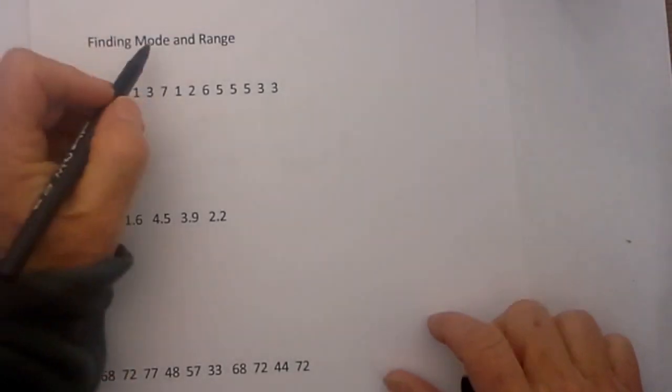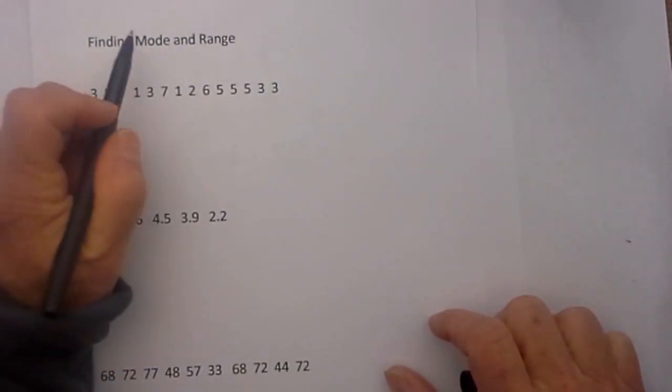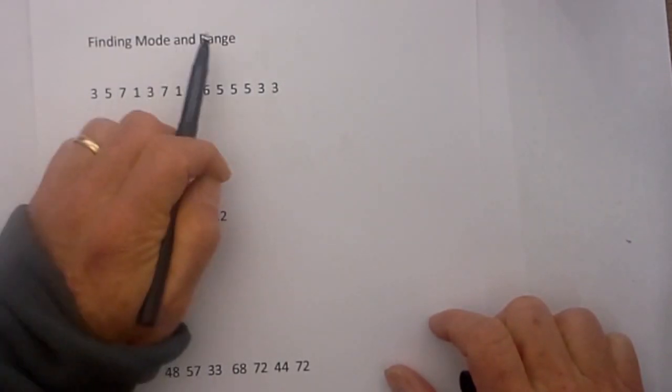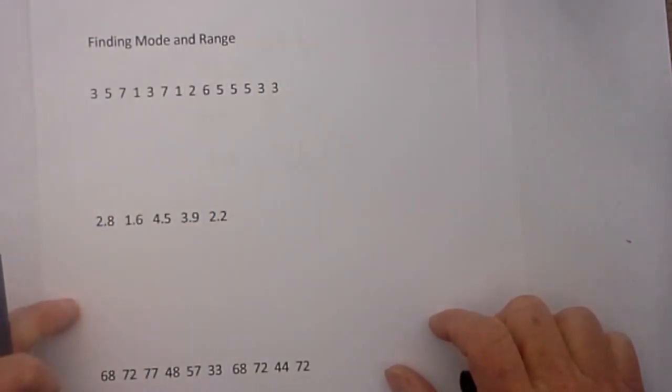In this video I would like to talk about finding the mode and the range. The mode is the number or numbers that occur most often and the range is the difference between the high and the low number.